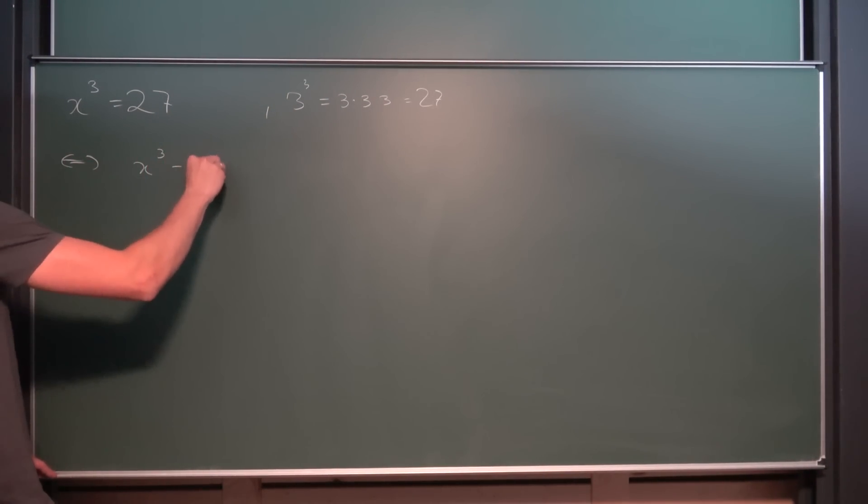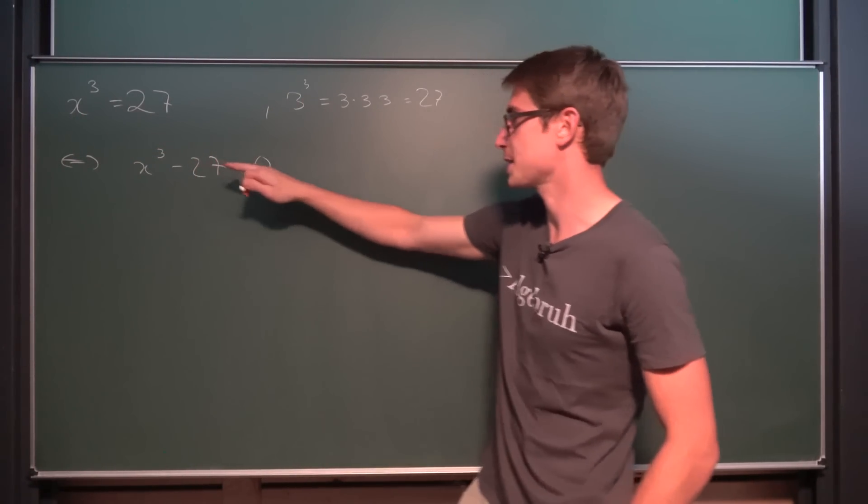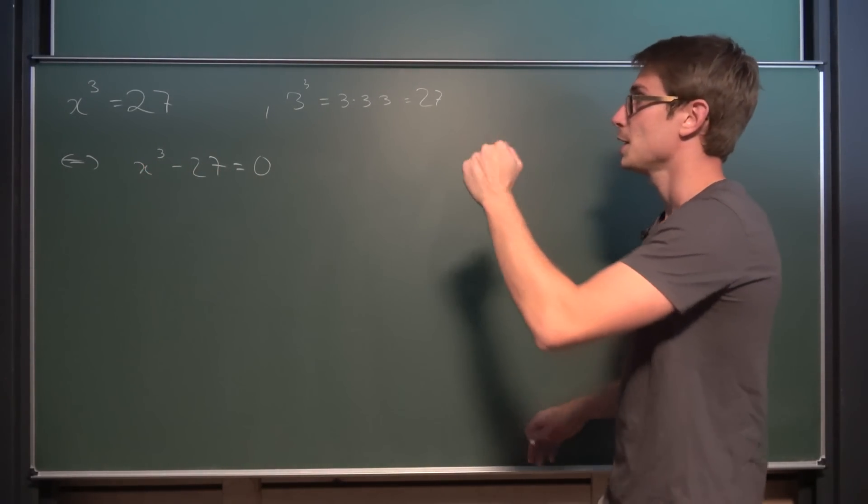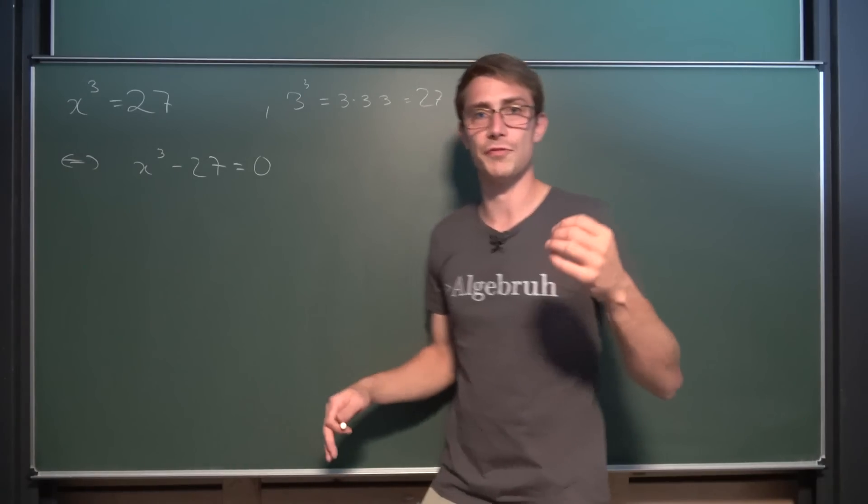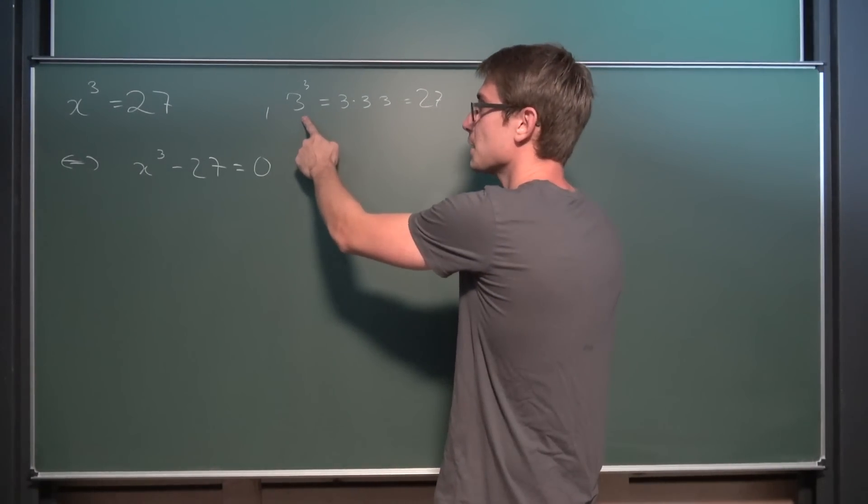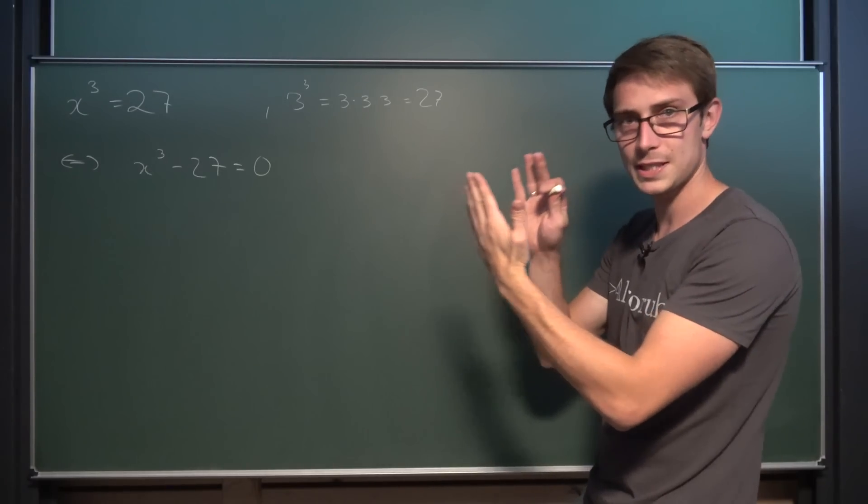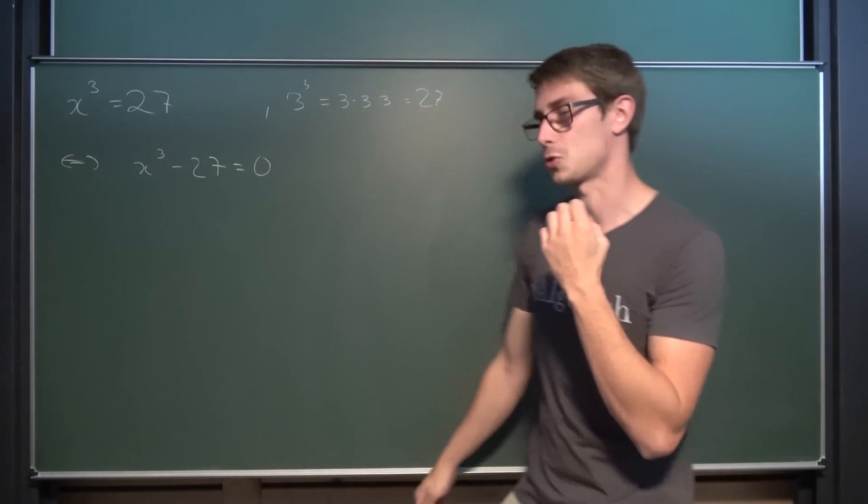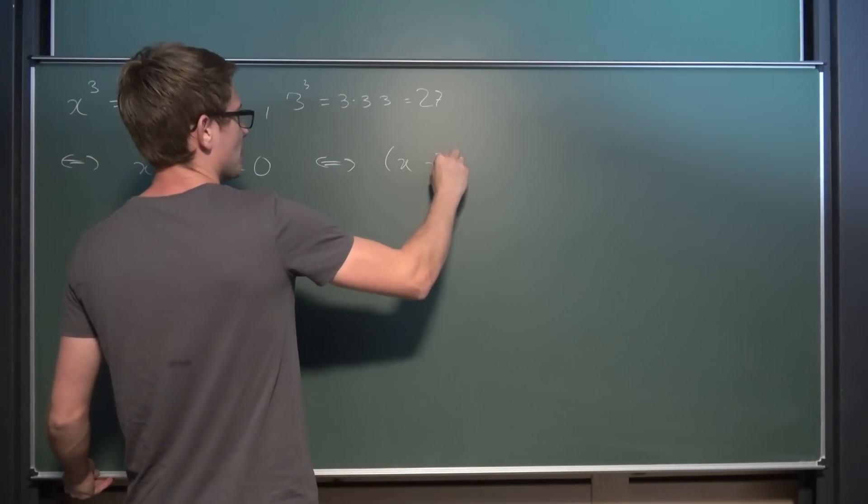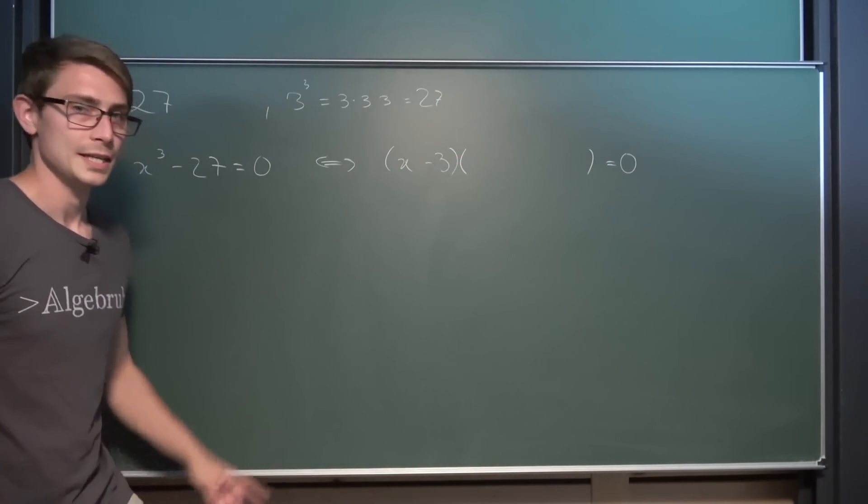What we do here basically is we have created ourselves a third degree polynomial and by setting it equal to zero we are looking for the zeros of this very function. Now the cool thing about polynomials is that they can be factored into linear factors and we already know one linear factor, namely x minus 3, because linear factors means if you plug an x value in then that part is going to become zero and hence the whole polynomial is going to collapse into zero.